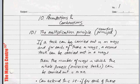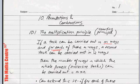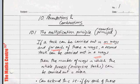A lot of words here. Let's get through the words first. Just bear with me. If a task can be carried out in M ways, and for each of these M ways, a second task can be carried out in N ways. Let me go through that again. If a task can be carried out in M ways, and for each of these M ways, a second task can be carried out in N ways, then the number of ways in which the whole process or successive tasks can be carried out is equal to M times N.